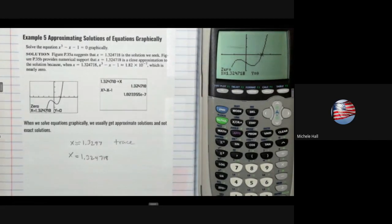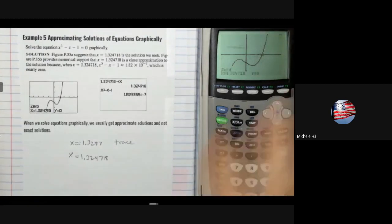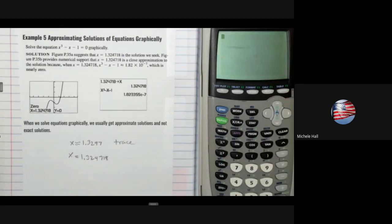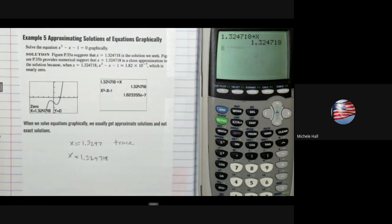Now I can check this. I would like to store that number in x. 1.324718. Here's the store button, S-T-O-R. Where do I want to store it? I want to store it in my variable x. Enter. Now what I can do is check to see if that's true.